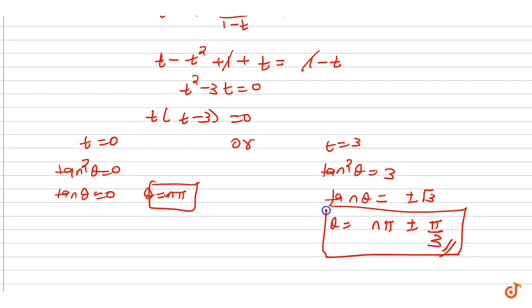Theta equal to n pi plus minus pi by 3 and theta equal to n pi. So answer will be which I have mentioned below then in the blanks question.